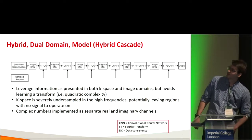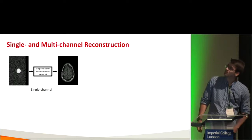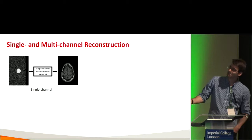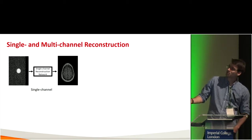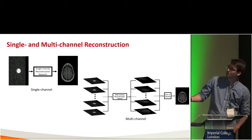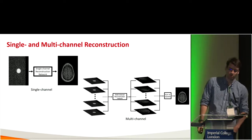Complex numbers are implemented as separate real and imaginary channels. For single-channel reconstruction, the input is k-space acquired using a single-channel coil, and the network outputs an image reconstruction. For multi-channel reconstruction, the input is the k-space channels of the coil array, the network learns the corresponding image reconstructions, and then these are combined using the square root sum of squares algorithm.